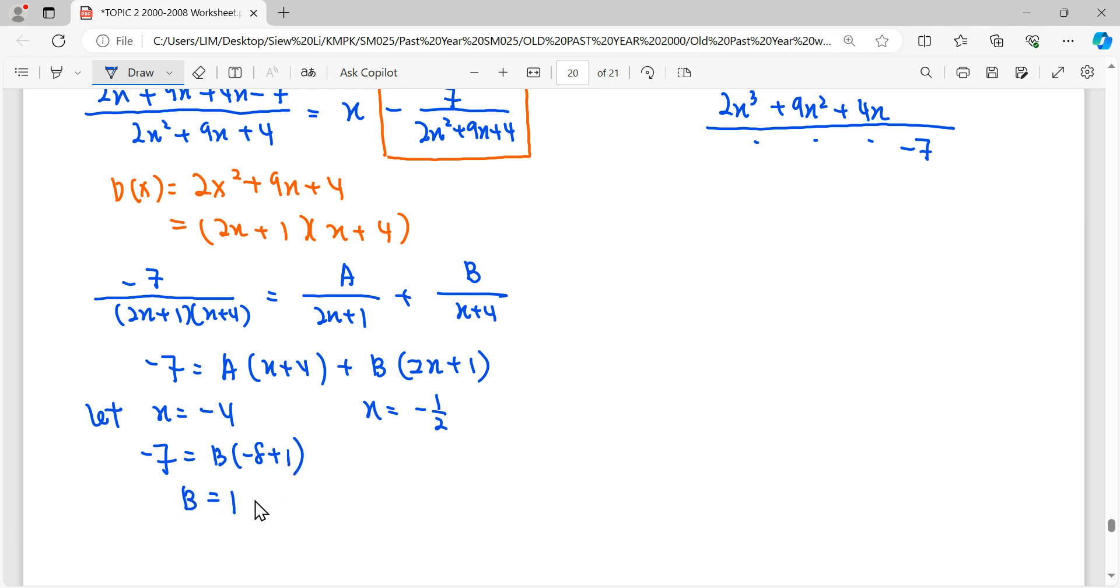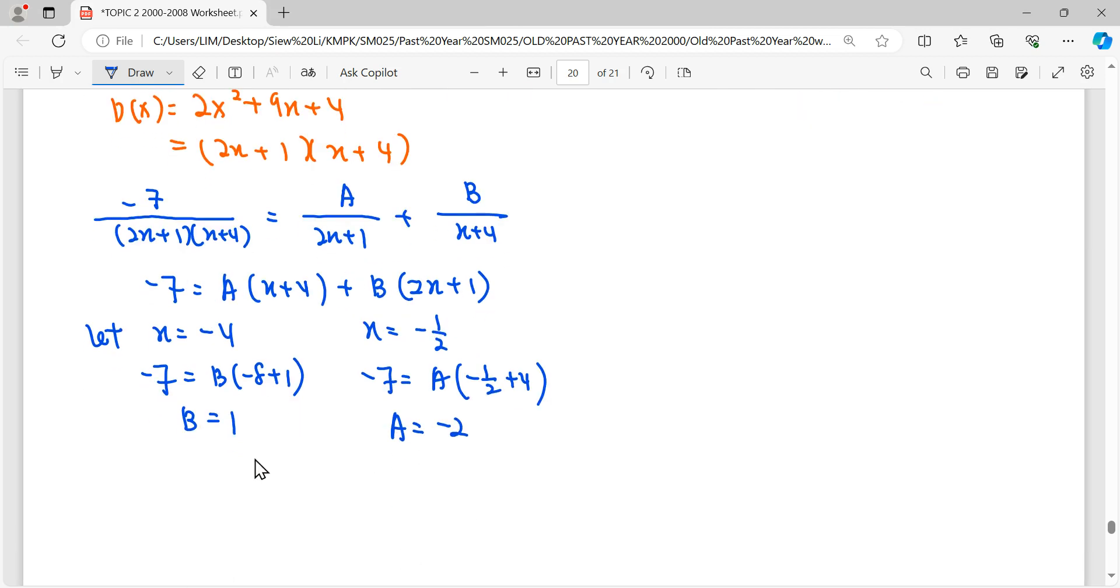So B is 1. Then we substitute negative 1 over 2 and then B will be eliminated, so we're finding the A. So A is negative 2.